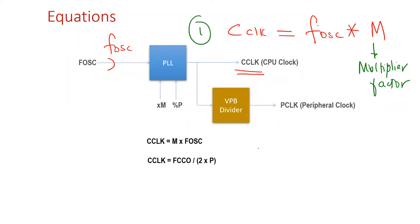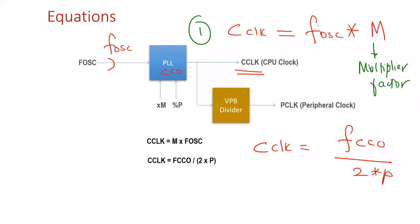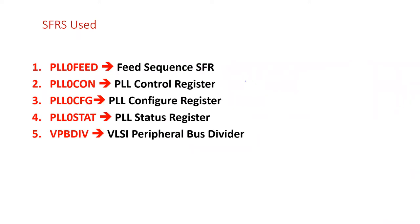The second equation is: C-clock = F-CCO / (2 × P), where F-CCO is the frequency of the current controlled oscillator and P is the divider factor. So CPU clock equals M times oscillation frequency, and CPU clock also equals the CCO frequency divided by 2P. Keep these two equations in mind. PLL is also a peripheral device, so we need to use its special function registers.